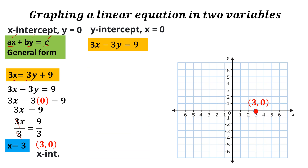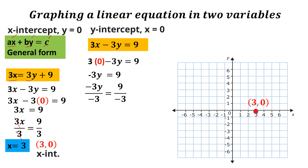Proceeding to the y-intercept: this time x should be 0. The general form is 3x minus 3y is equal to 9. Substituting x with 0 gives us negative 3y is equal to 9, because 3 times 0 equals 0. Since we need to get the value of y, we divide both sides by negative 3. Applying the division property of equality, y is equal to 9 divided by negative 3, which is negative 3. Let us now plot (0, negative 3). Remember it is negative 3, so from the origin we go down 3 units vertically — 1, 2, and 3. That point is (0, negative 3).